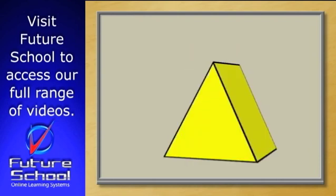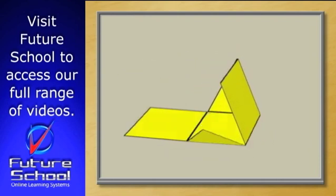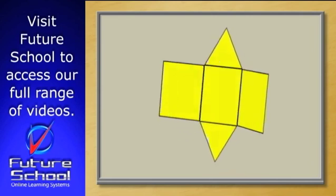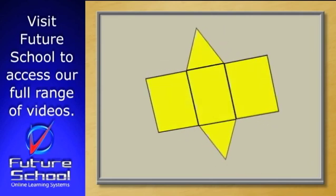If we unfold any prism, we can see that one or more rectangles form the sides, and then we can see the shape of the ends, which determine the name of the prism.